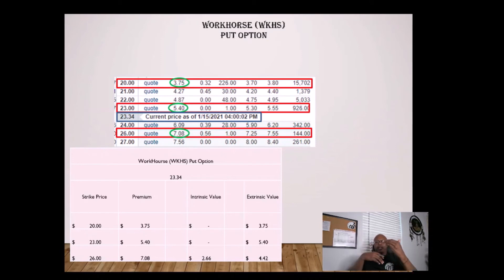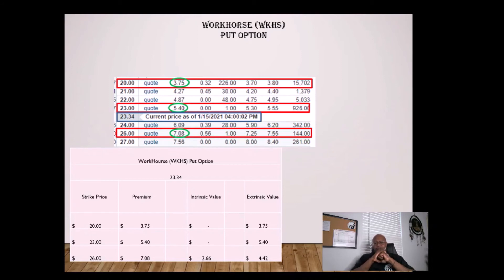Remember, the opposite in-the-money condition applies when dealing with a put versus a call. The $20 strike price has a premium of $3.75. Since that is out of the money on the put side, there's no intrinsic value, so that $3.75 is 100% extrinsic time value. Similarly, the $23 strike price with a premium of $5.40 is also considered out of the money, so that $5.40 is 100% extrinsic value.